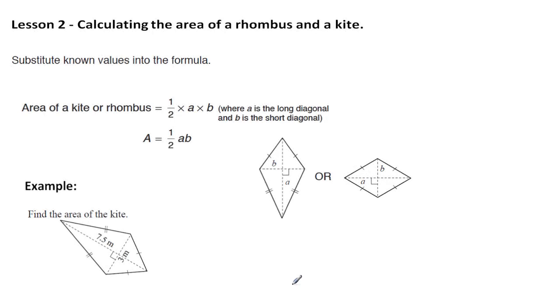In this lesson we're going to have a look at calculating the area of a rhombus and a kite. Now even though these are two different shapes, they have the identical equation for calculating their area.